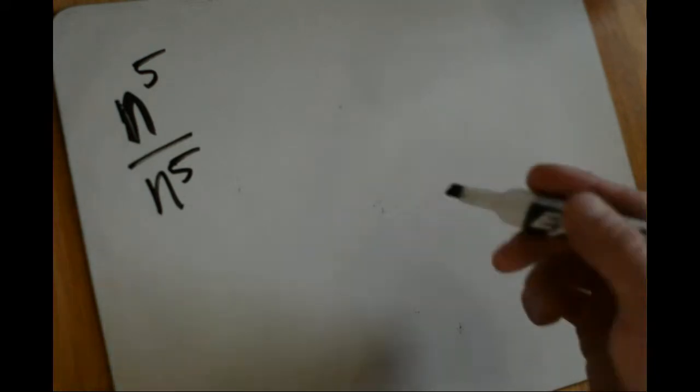Let's take a look at some properties of zero and negative exponents. The first thing I have here is an expression that I want to simplify in two different ways. I have n to the fifth divided by n to the fifth.